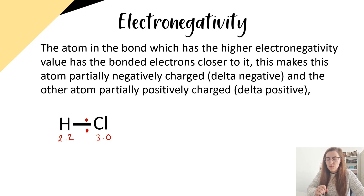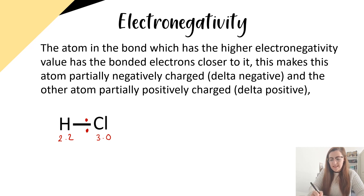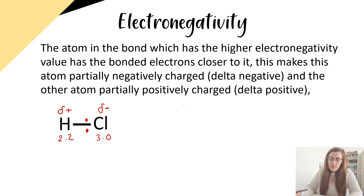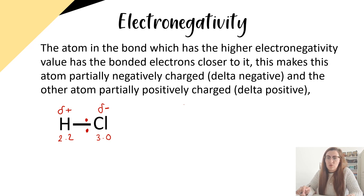The way we represent that in chemistry is that chlorine is delta negative — we give it this little delta sign with a negative — and hydrogen is delta positive. Delta negative means the electrons are lying closer to chlorine, and delta positive means hydrogen is feeling a little bit positively charged because the electrons are not as close to itself.